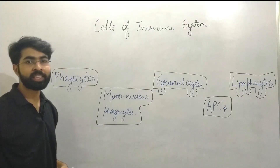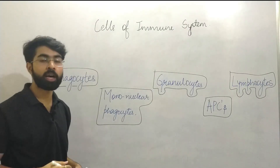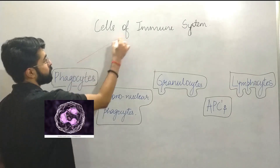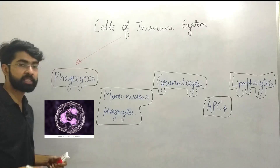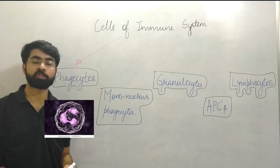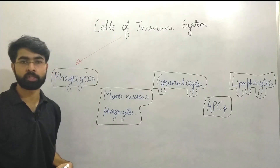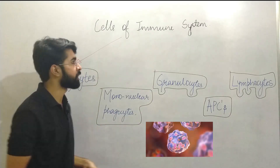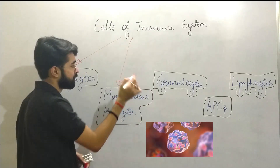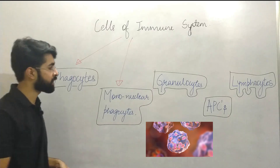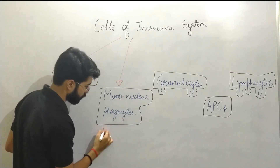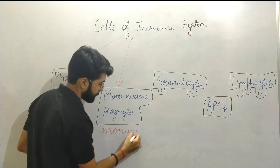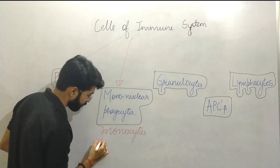The basic classification of the cells of the immune system gives us primarily five types. The first is phagocytes — cells which perform phagocytosis, which we'll discuss later. Next are mononuclear phagocytes, which are often called monocytes or macrophages.